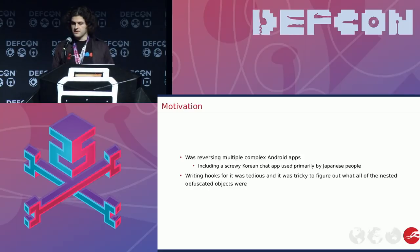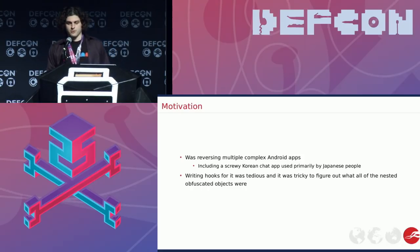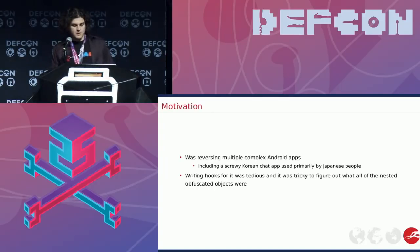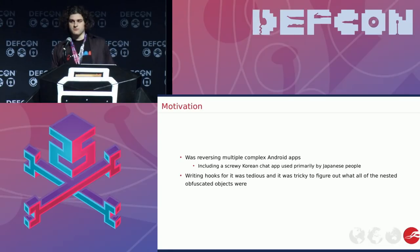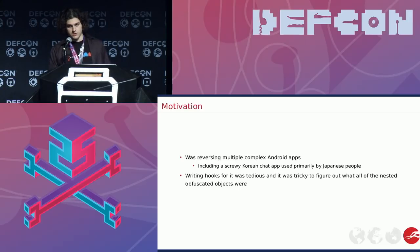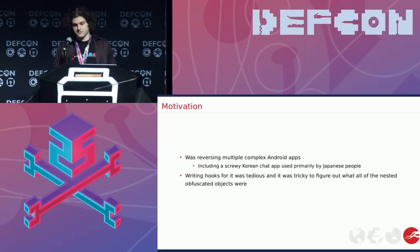Going back in time a little bit, I was reversing this chat app called Line that's really screwy. And aside from the ProGuarding and stuff, which doesn't really matter, the main annoying part of it was that everything was like an interface of something else. And it was really annoying to find out what objects actually were at runtime. I was just writing a bunch of one-off hooks to see what the object was and then go off and do it again.